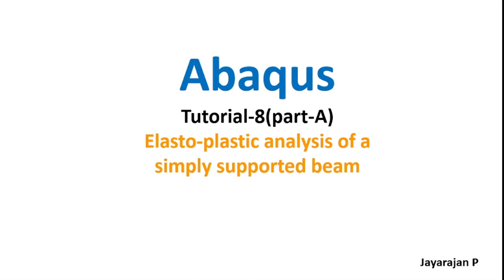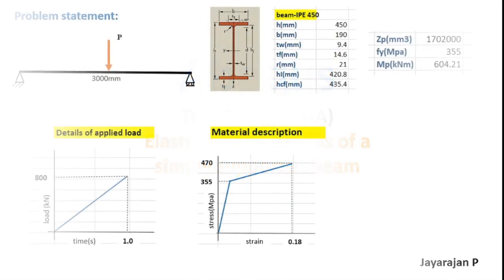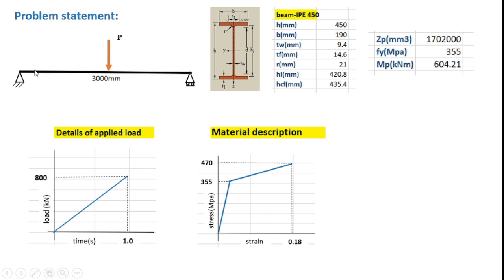This is part A of the tutorial. Let me first take you to the problem statement. As shown in the sketch, elasto-plastic analysis will be carried out for a simply supported beam. The beam has a span of 3000 mm. It is subjected to a concentrated load at the center. It is a steel beam.